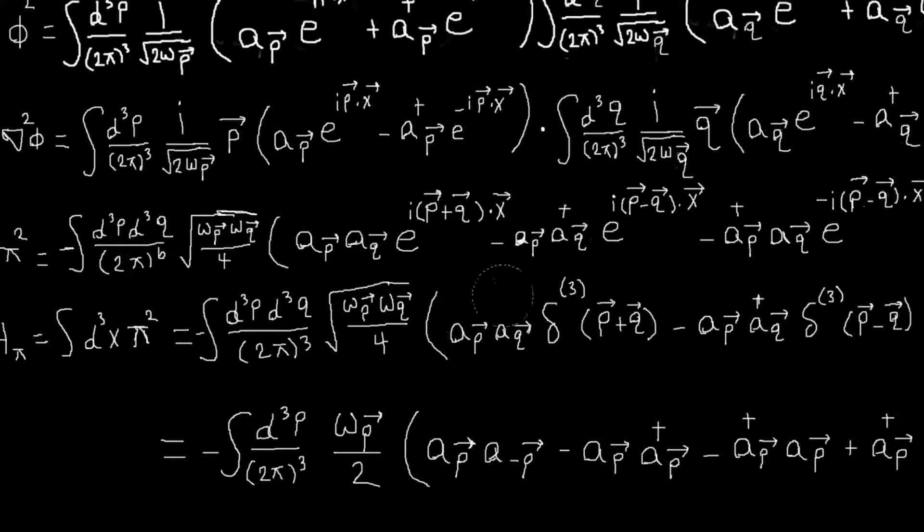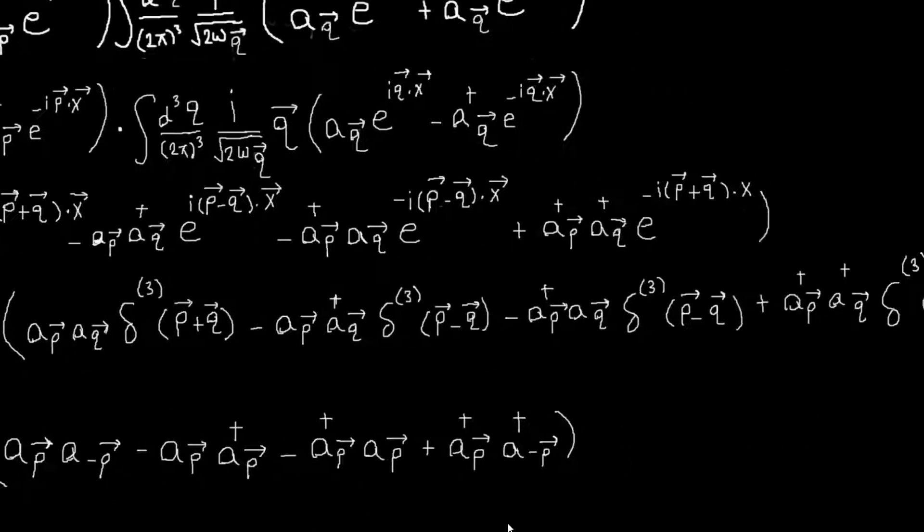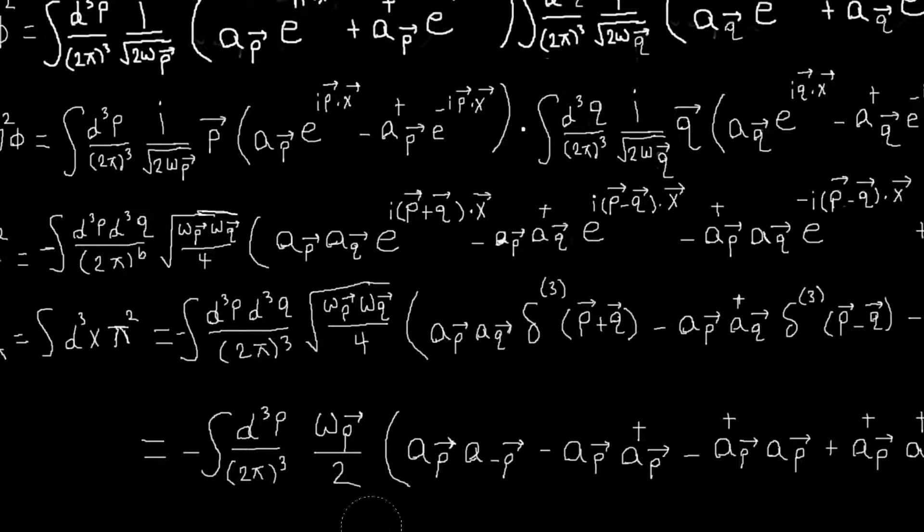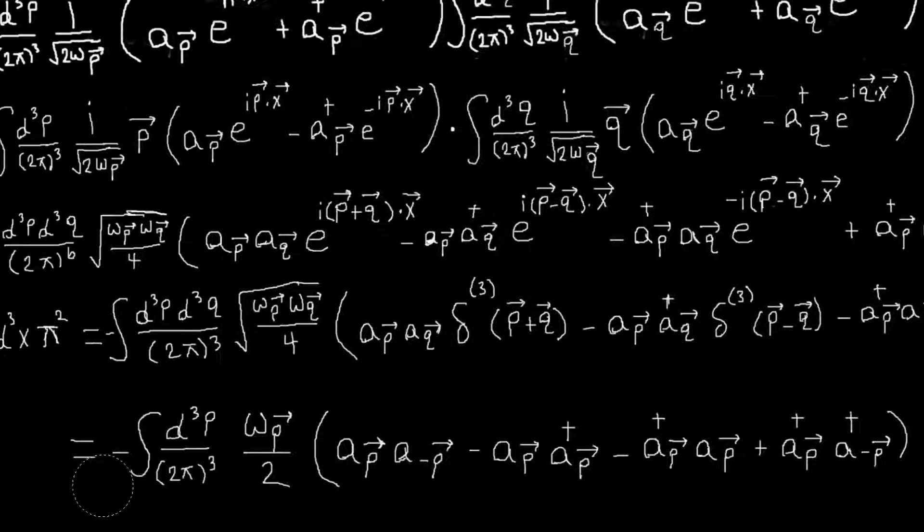So technically speaking, I should put these w_q's and w_p's in with each of these terms, because sometimes you get w minus p, sometimes you get w_p, but w minus p is the same as w_p, because w is square root of p squared plus m squared. So we can leave it out and just replace w_q with w_p. And so that will give us a net of just w_p.